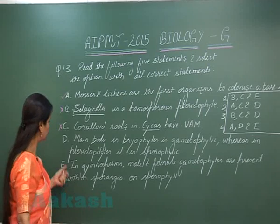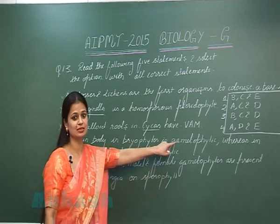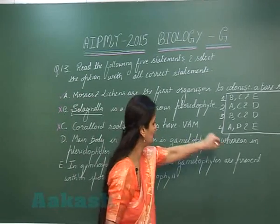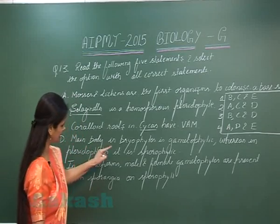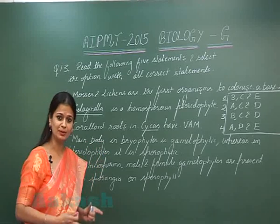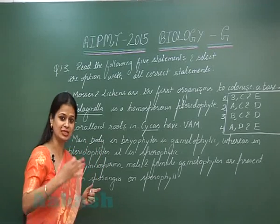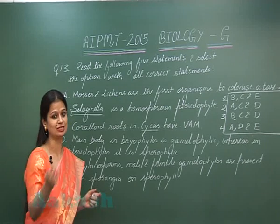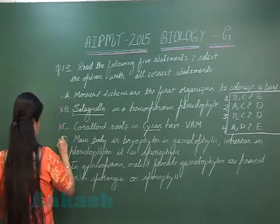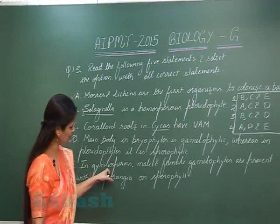Statement D: The main body in bryophytes is haploid, that is gametophyte — correct. Whereas in pteridophytes it is sporophyte, which is diploid. In bryophytes the main body is haploid, and in pteridophytes, gymnosperms, and angiosperms it is diploid, that is sporophyte. So this statement is correct.